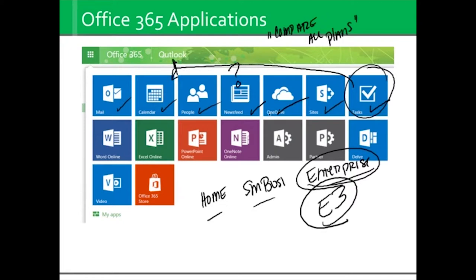When you get to OneDrive, it allows you to use applications. Now, the online version of Word, Excel, and PowerPoint as well as OneNote are not full versions — they are what I would consider 30% of the program, which is the most popular 30%. You can get up there and create very elaborate documents, but there are just going to be some features that won't be available on an advanced level, and you have to install it on the local computer and use the full version. Admin is where you spend a lot of time setting up Office 365 and maintaining your users.